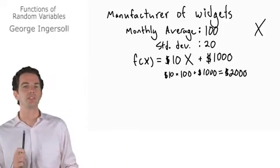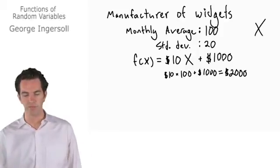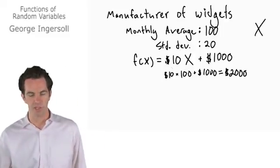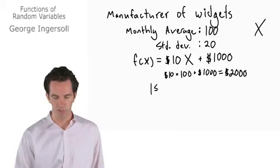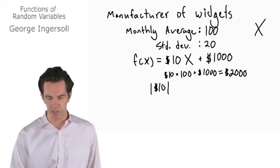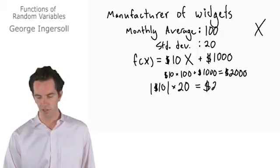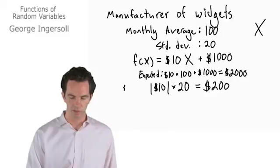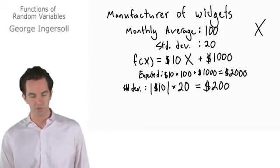Now if we want to figure out the standard deviation of the cost to operate our factory, it's also going to be fairly similar. We don't have to worry about the constant — it doesn't factor into our standard deviation. What we do have to think about is the slope of our function, which is $10. The equation is going to be the absolute value of the slope — in this case $10 — times the standard deviation, which is 20 widgets. So our standard deviation of the cost function is going to be $200.